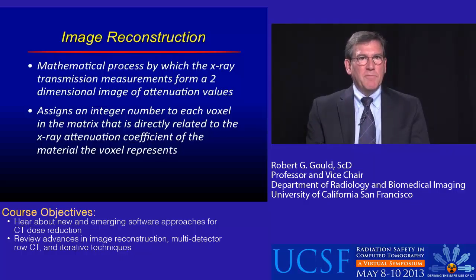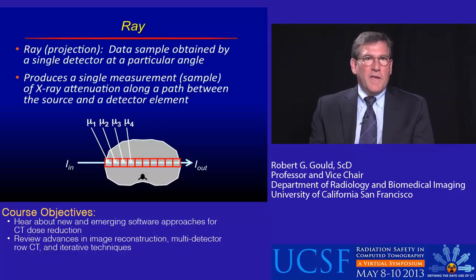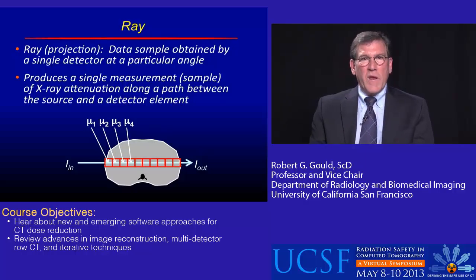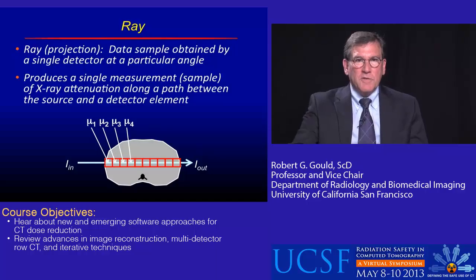Data is sampled by a single detector at a particular angle, producing a single measurement — which we call a sample — of x-ray attenuation along a path between the source and the detector. So the rays are going to be used as part of the reconstruction.